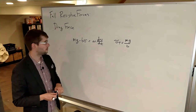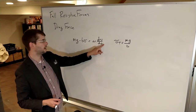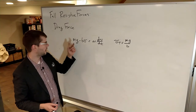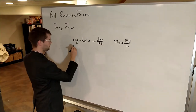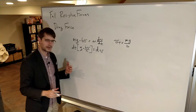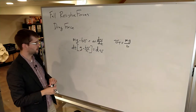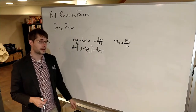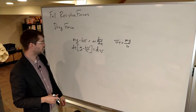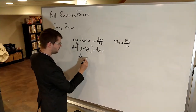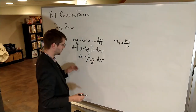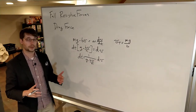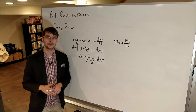We'll get to that in just a bit. First, we're going to split this up, bring the dt to one side and bring the m over as well. We're getting toward separation of variables, but notice this expression has a v in it, so it needs to stay on that side too. We'll take the integral of both sides to get the answer.